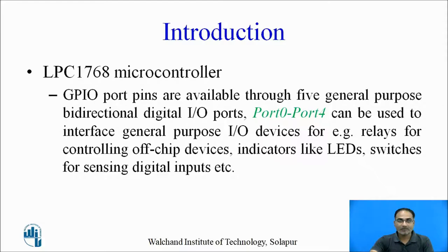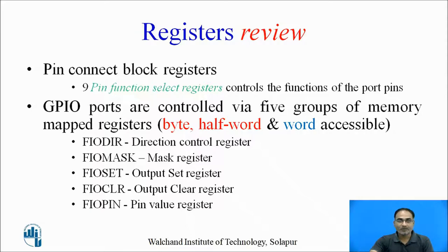GPIO port pins are available through five general purpose bi-directional digital IO ports, port 0 to port 4, which you can use for interfacing general purpose IO devices like LEDs, switches, relays, and similar devices. Let us review the registers which we will require for writing a simple interfacing program. From the pin connect block, we may require the pin function select register, which controls the function of each port pin.